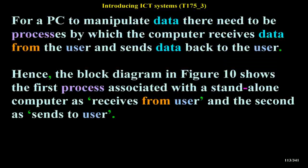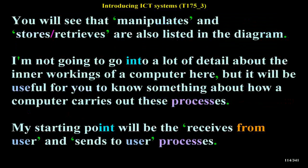For a PC to manipulate data, there need to be processes by which the computer receives data from the user and sends data back to the user. The block diagram in Figure 10 shows the first process associated with the stand-alone computer as 'receives from user' and the second as 'sends to user'. You will also see that manipulates, stores and retrieves are listed in the diagram.